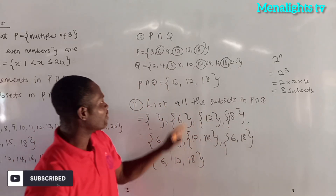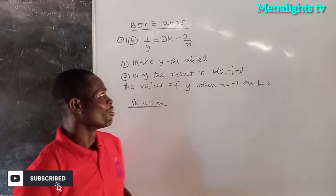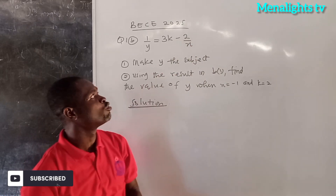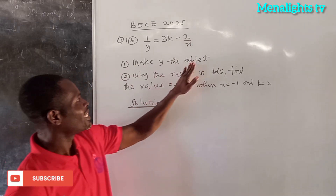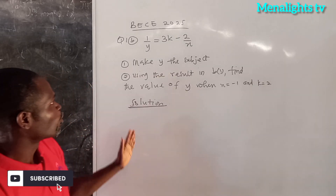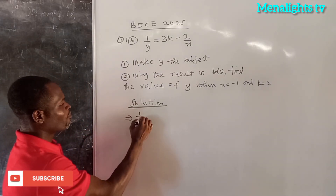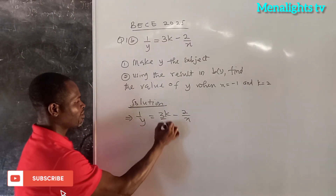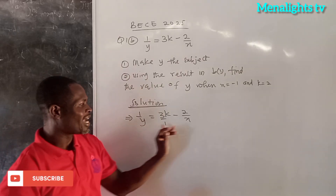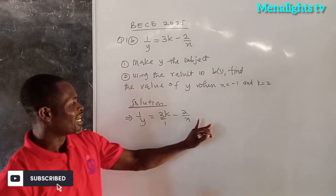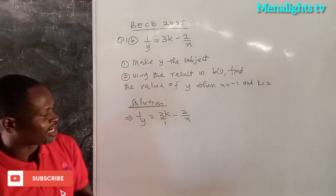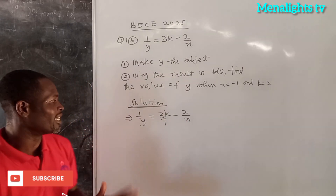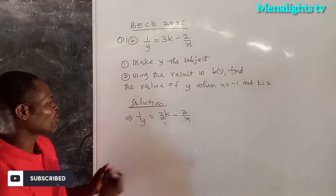So we come to question 1B. We have the relation 1 over Y equals 3K minus 2 over X. First, we have to make Y the subject. So we have 1/Y = (3K − 2)/X, which is the same as over 1. We identify Y, X, and 1 as denominators, so the LCM is XY. We multiply all three terms by XY.